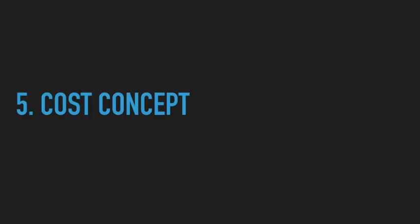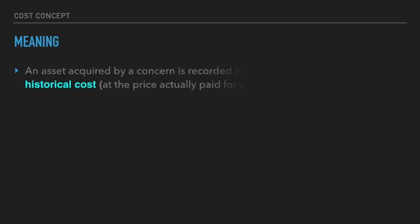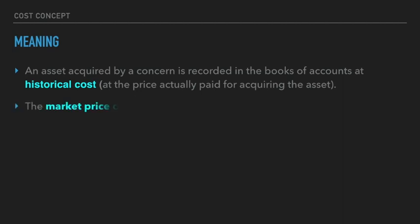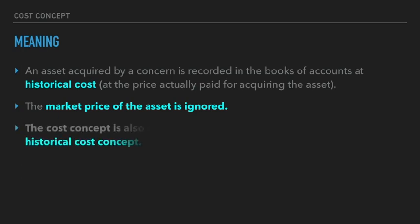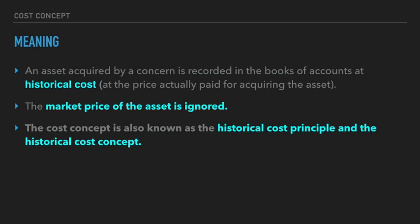The next concept is the cost concept, also known as the historical cost concept. Historical cost means the cost at which we purchased or acquired our assets. Market price is to be ignored; we do not take the current market price. We record assets at the cost at which we originally acquired them. This concept is also known as the historical cost principle.